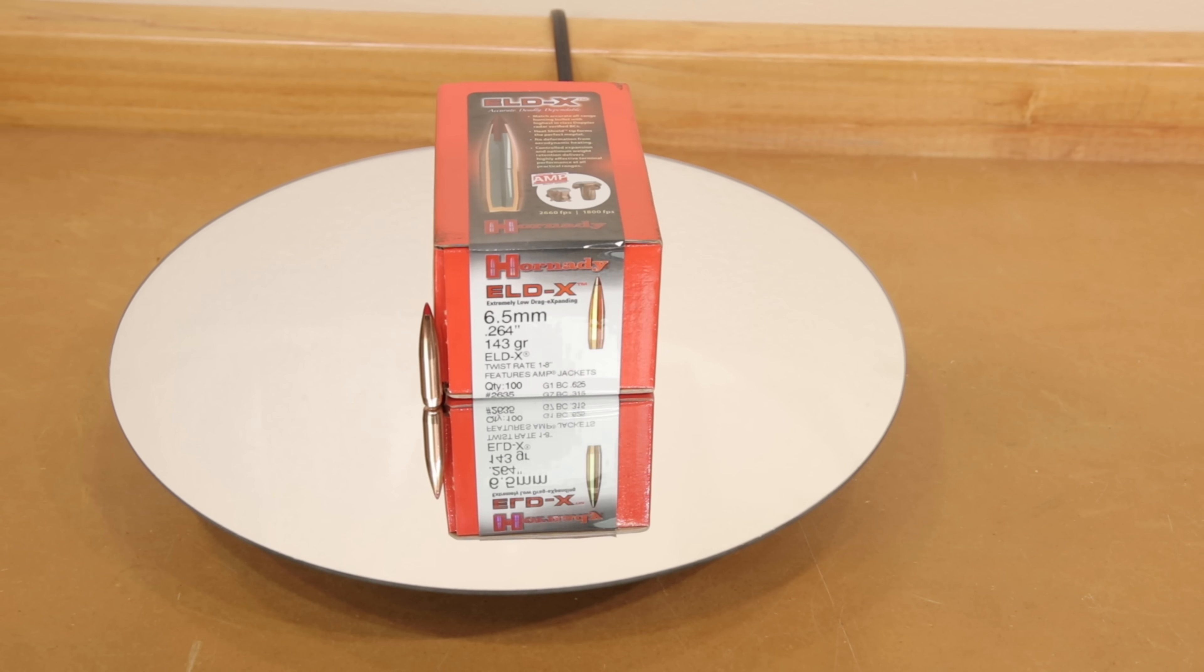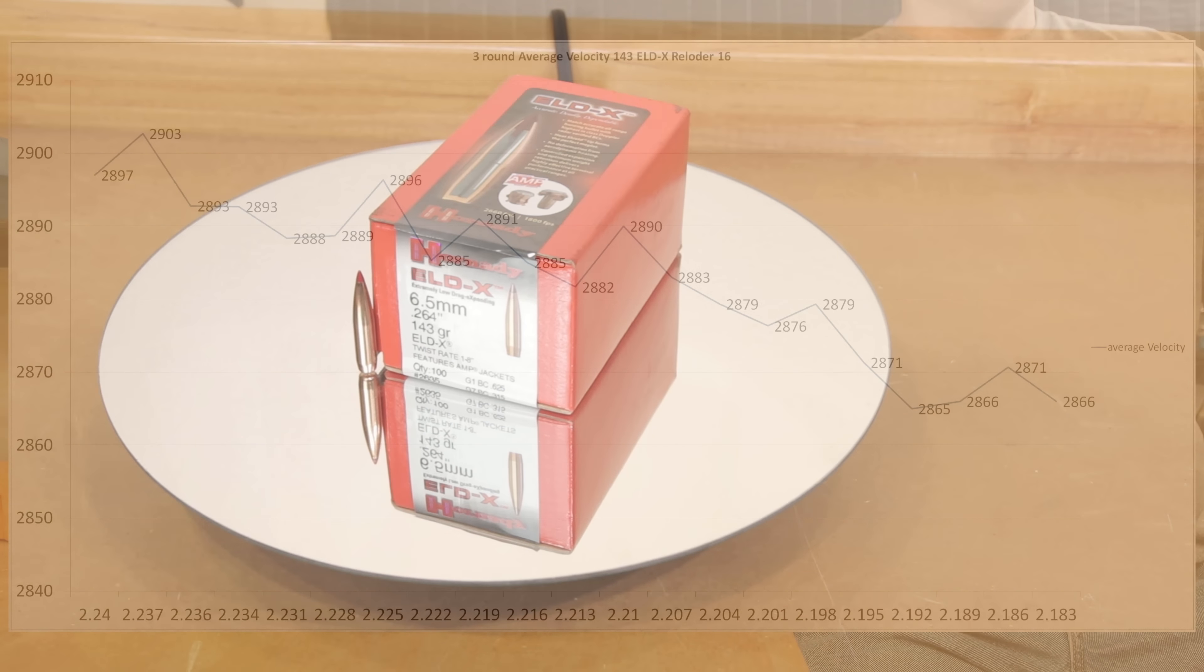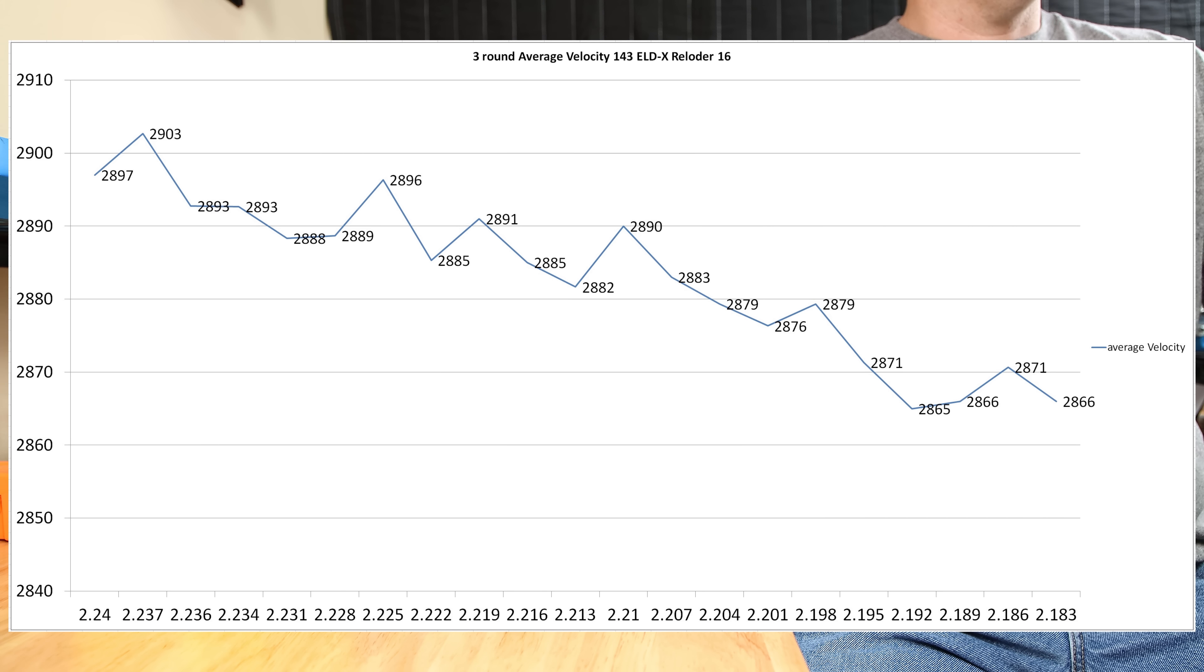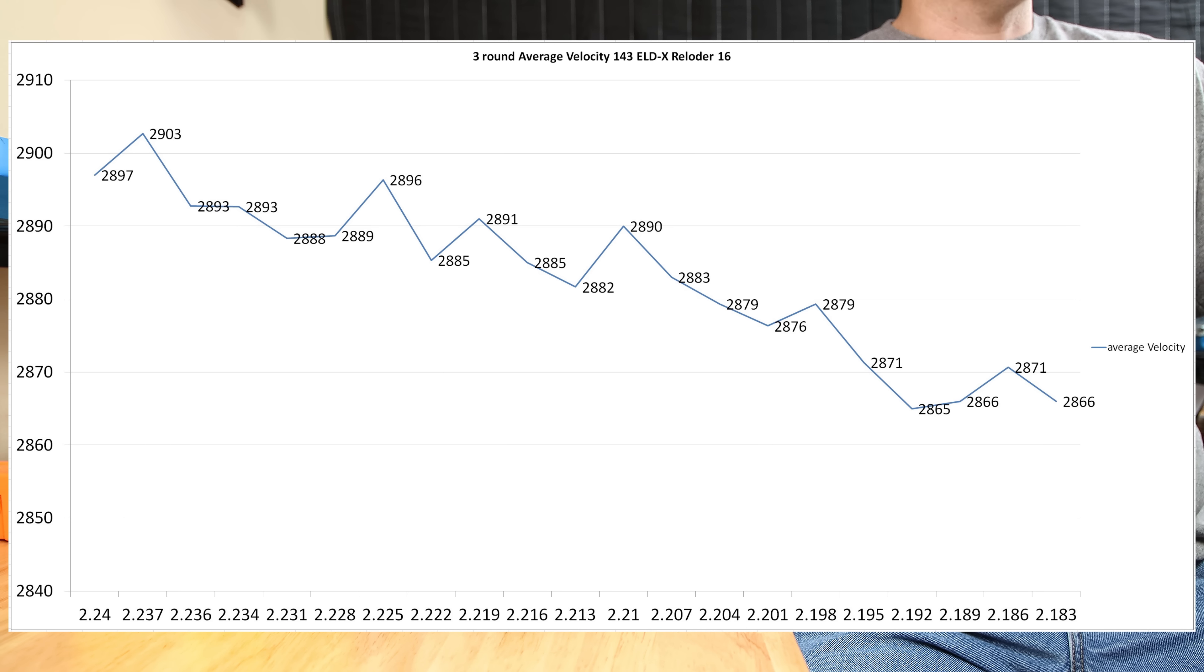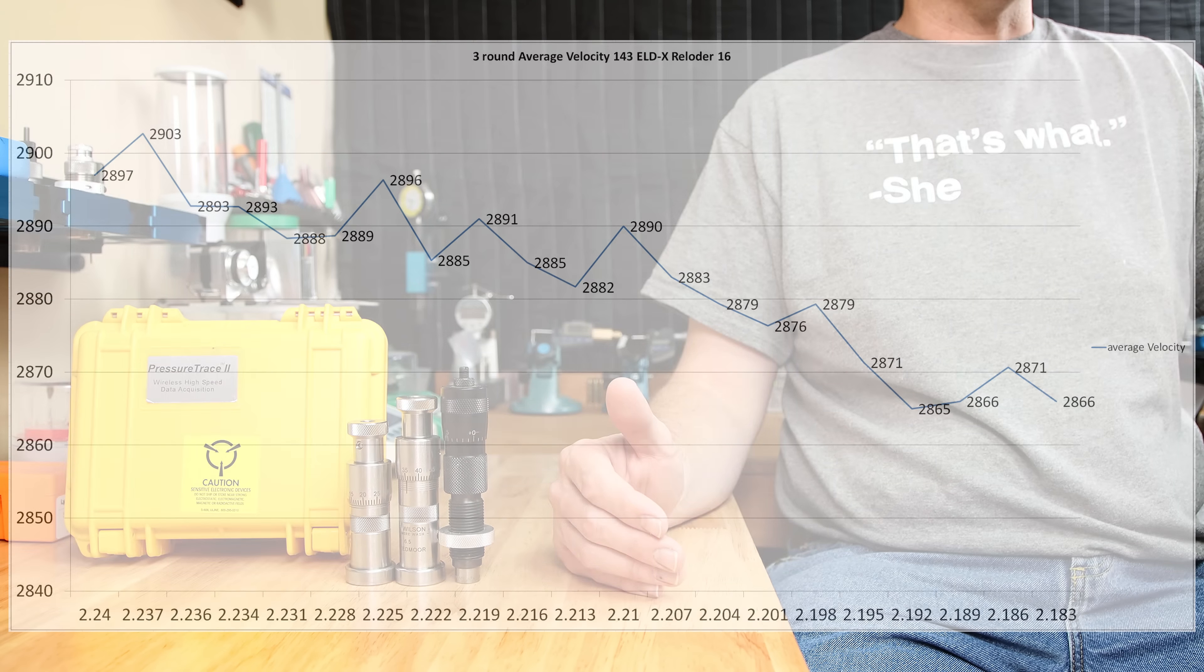Before I bought my Pressure Trace 2, I had run a test here on the channel with the 143 grain ELDX and Reloader 16, and showed how the velocity changed as we modified cartridge overall length. The X axis here is in CBTO, but you can see as we move the projectile out of the lands, our velocity dropped from almost 2900 feet per second down to just under 2870 feet per second, after moving the projectile a little over 50 thousandths.